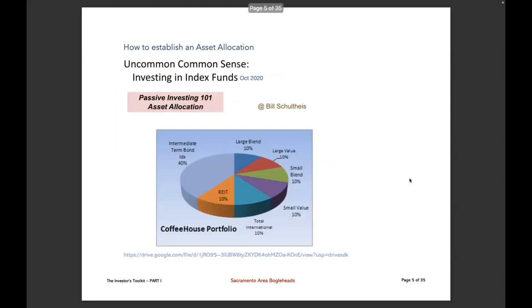This is from a presentation from October 2020 called 'Investing in Index Funds.' On the screen is a possible portfolio from Bill Schultheis called the Coffee House Portfolio. This may help you establish an asset allocation by looking at other people's portfolios. Rick Ferri has a sample portfolio, Bill Bernstein has one, and there are Bogleheads three-fund and four-fund portfolios — all outlined in that presentation called 'Investing in Index Funds,' with a link at the bottom of the screen.